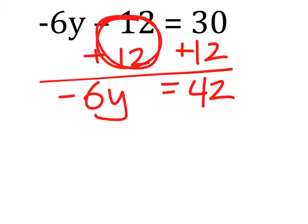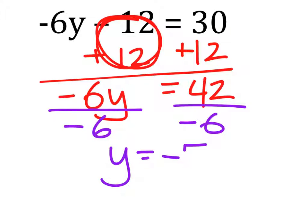We should have negative 6y. Then we'll divide both sides by the coefficient of y, which is negative 6. That tells us that y is negative 7.